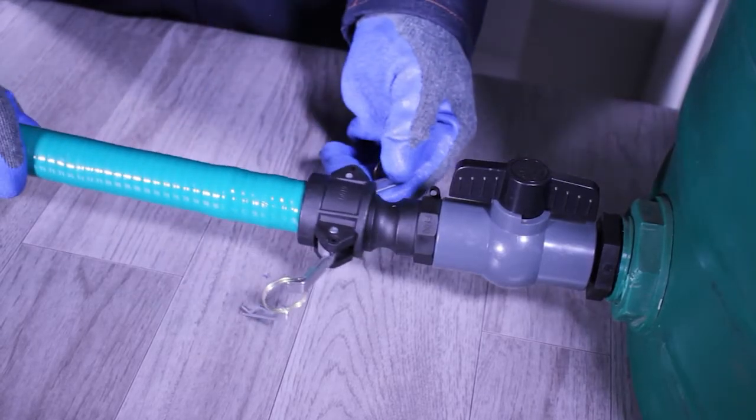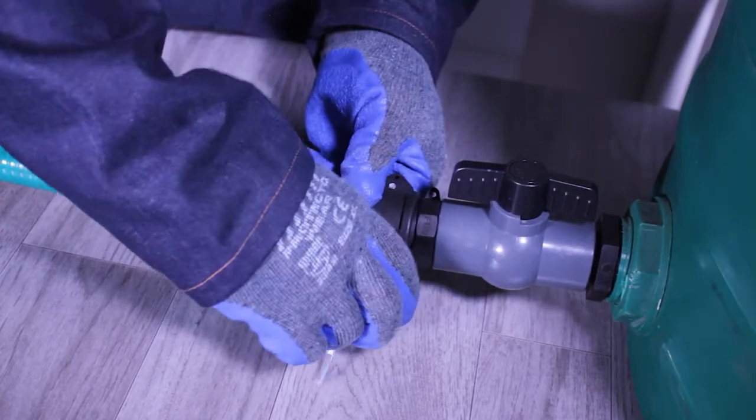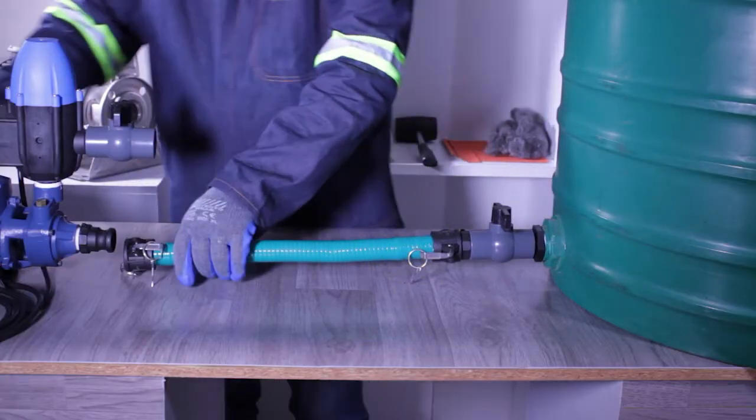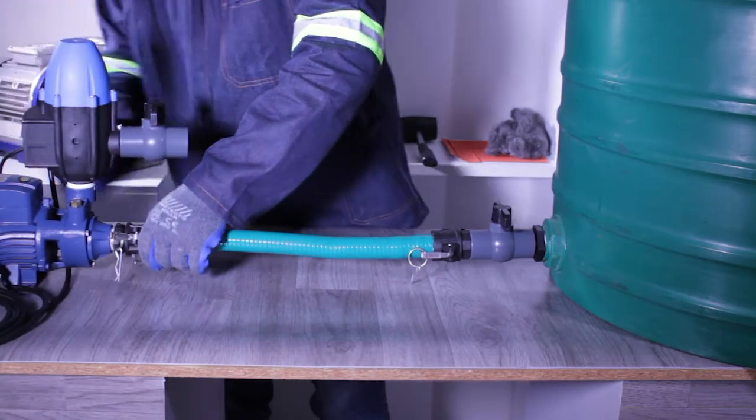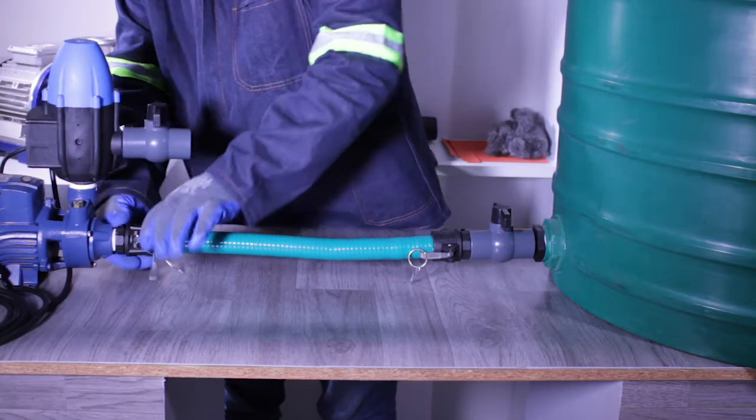Connect one end of the suction hose to the tank outlet and the other end to the pump inlet, ensuring that the camlock is secured in position.